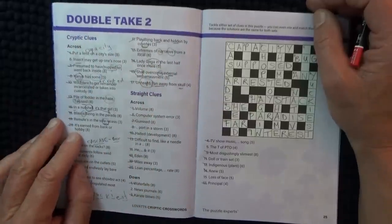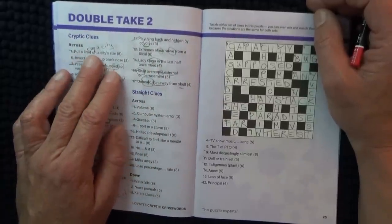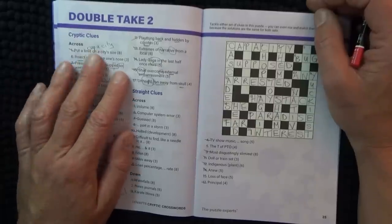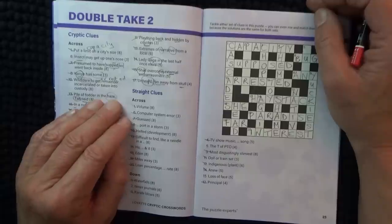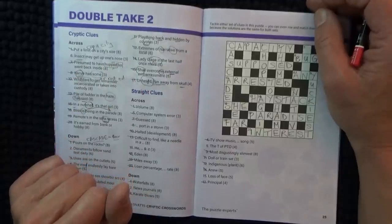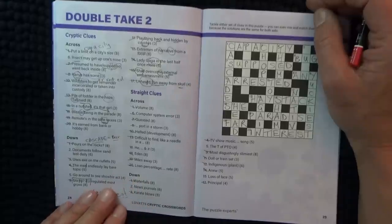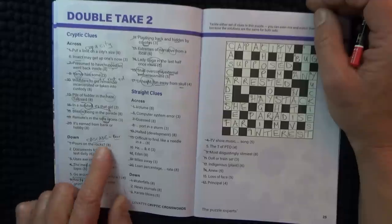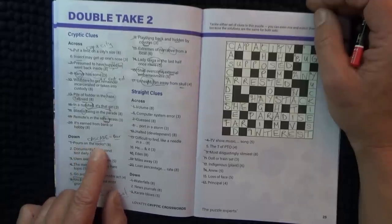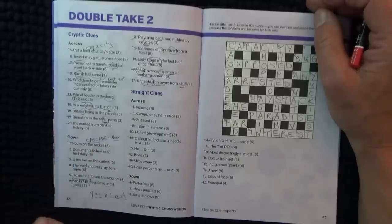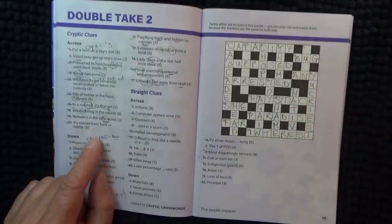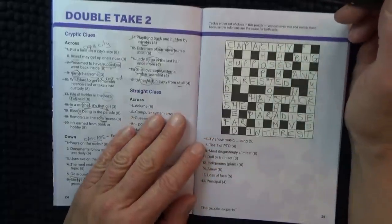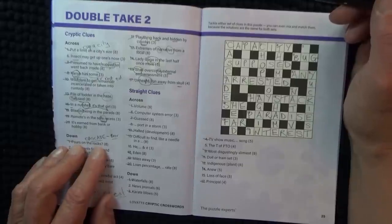So you just can't read cryptic clues just as a literal. Put a limit on a city size, you've got to work out where the first half of the clue stops and the second half begins. And then sometimes there'll be a clue that's only just one. The blue balls on the rocks might just be one, not really sure about that one. But it could be just one straight clue that gives you the answer, or one clue and then clue, if that makes sense now.